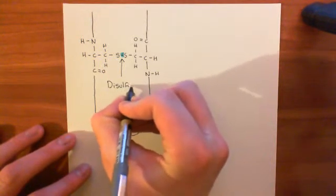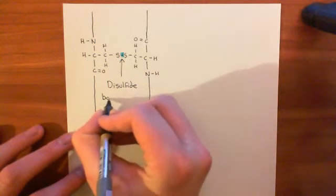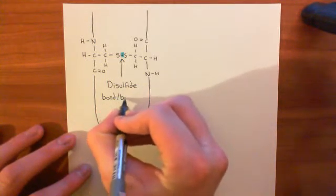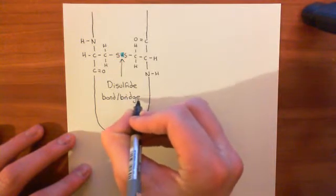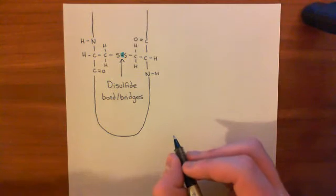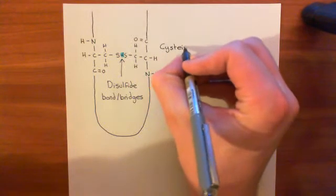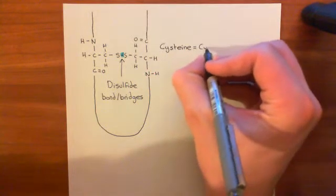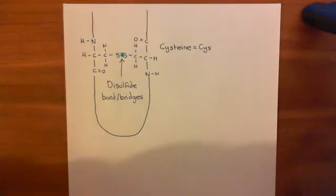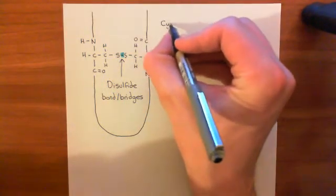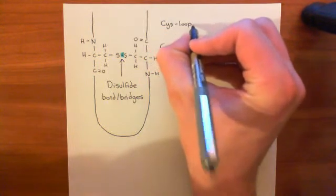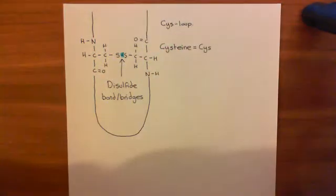This is the structure of a cis loop, and this bond between the two sulfurs, this is the disulfide bond, and this is what's holding together the whole of the cis loop. The amino acids that are involved in the formation of this disulfide bond are cysteine amino acids, and the three letter code for cysteine is CYS. That's why this structure is known as a cis loop.